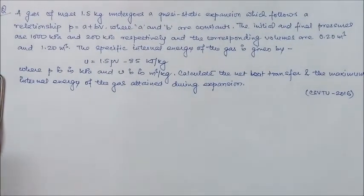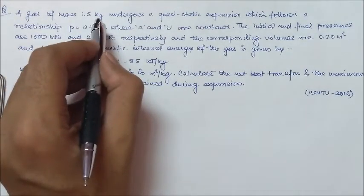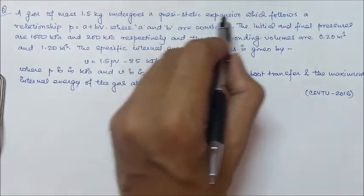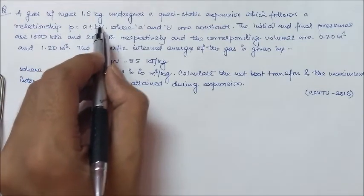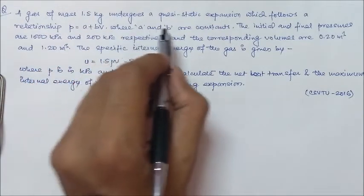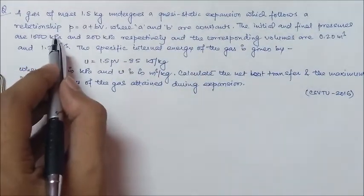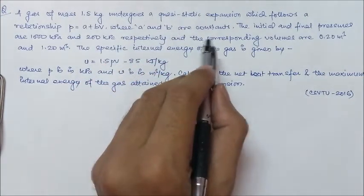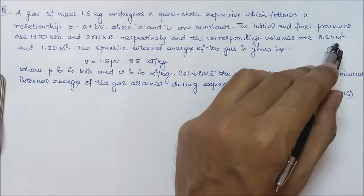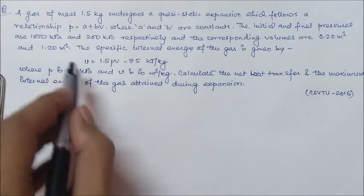The question is like this: A gas of mass 1.5 kg undergoes a quasi-static expansion which follows a relationship P equal to A plus BV, where A and B are constants. The initial and final pressures are 1000 kPa and 200 kPa respectively, and the corresponding volumes are 0.20 m³ and 1.20 m³.